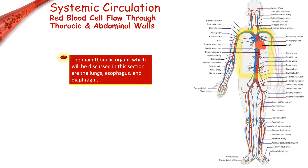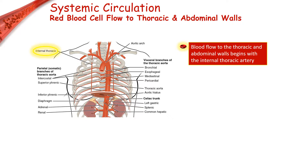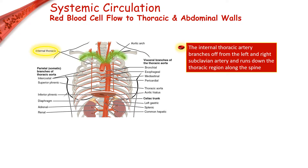This section of the slideshow will be focused on blood flow through the thoracic and the abdominal walls. We will also be discussing blood flow through the thoracic organs, though we will only be focused on the lungs, esophagus, and the diaphragm. Blood flow to the thoracic and abdominal walls begins with the internal thoracic artery. This artery branches off from the left and the right subclavian artery, and then runs down the thoracic region along the spine.